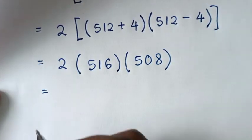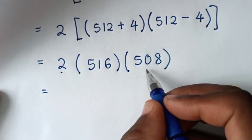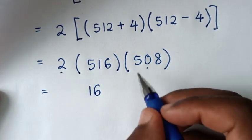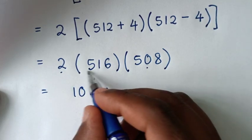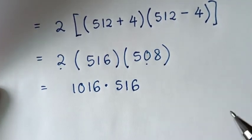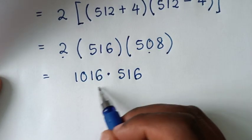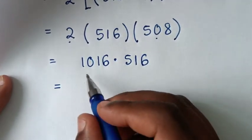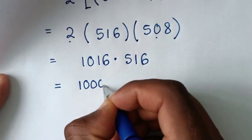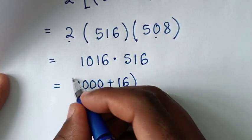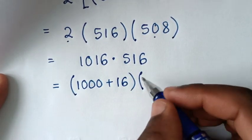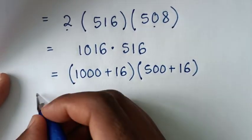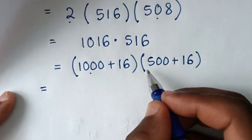In the next step, we'll take 2 times 508, which gives 1016. Then multiply by 516. To make multiplication easier, 1016 is the same as 1000 plus 16, and 516 is the same as 500 plus 16.